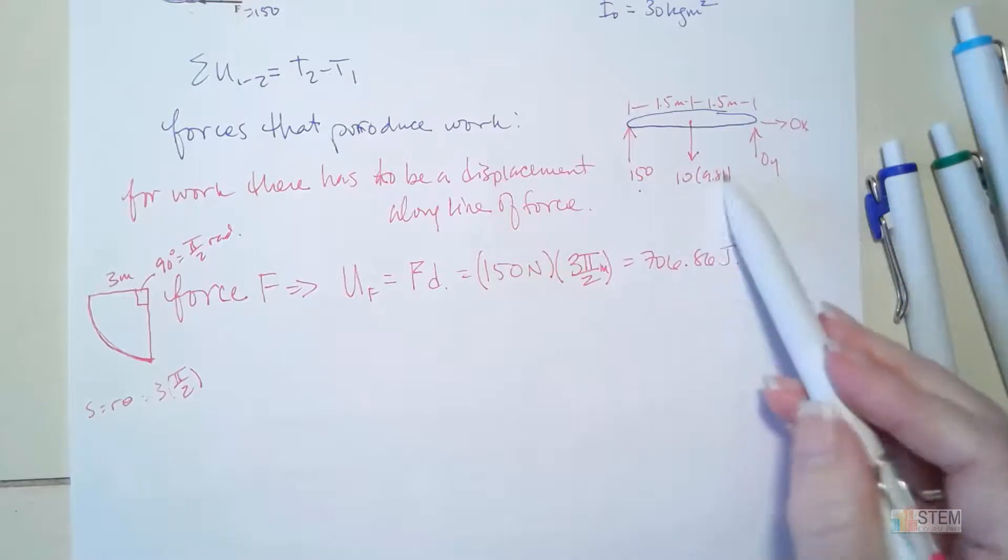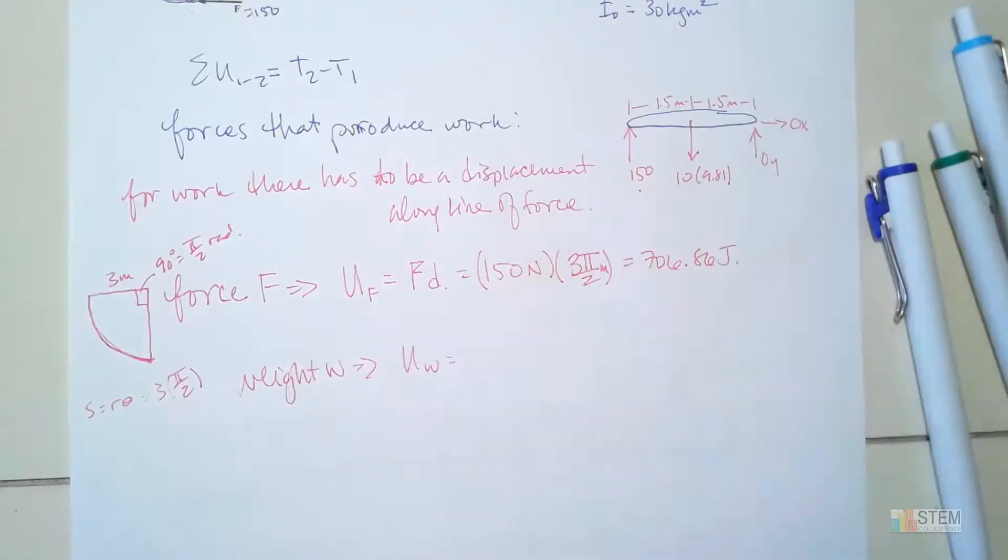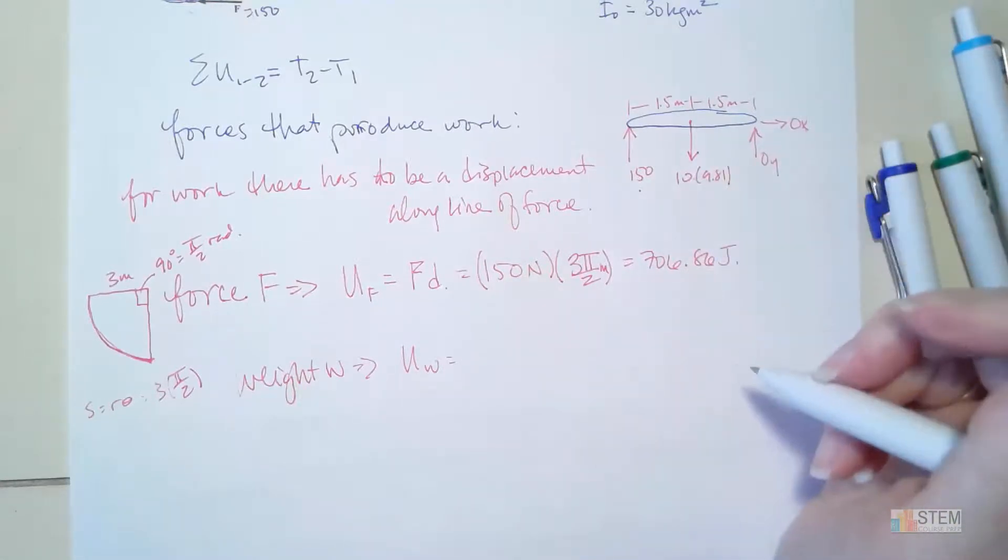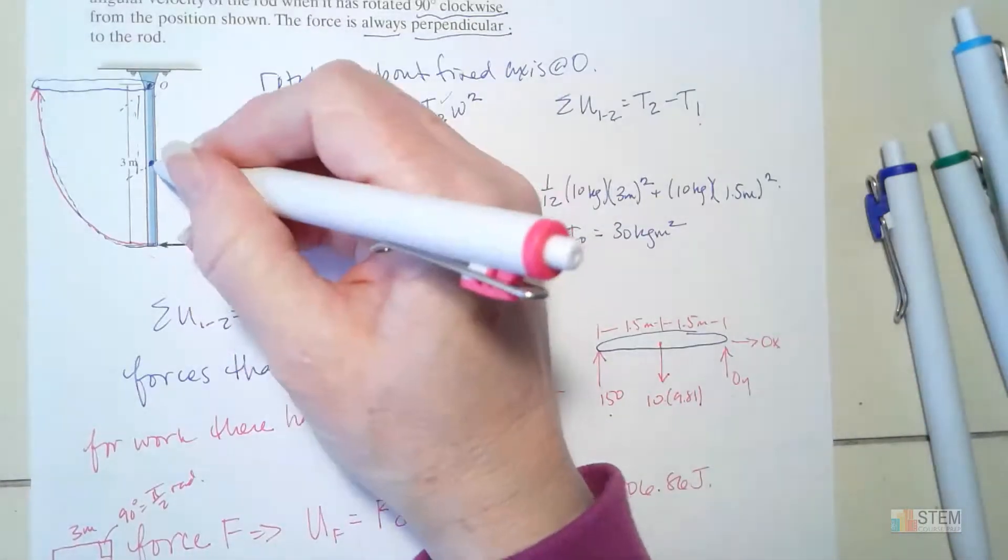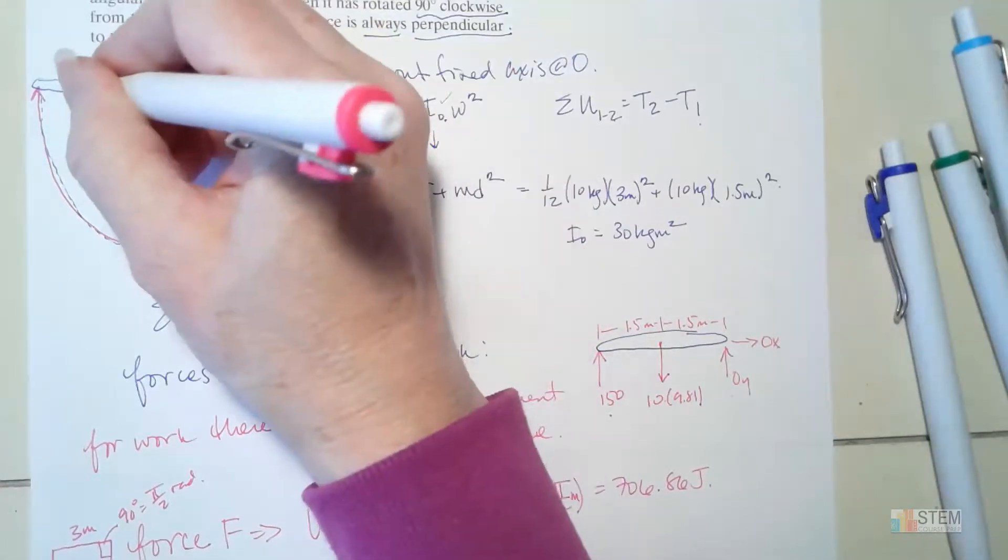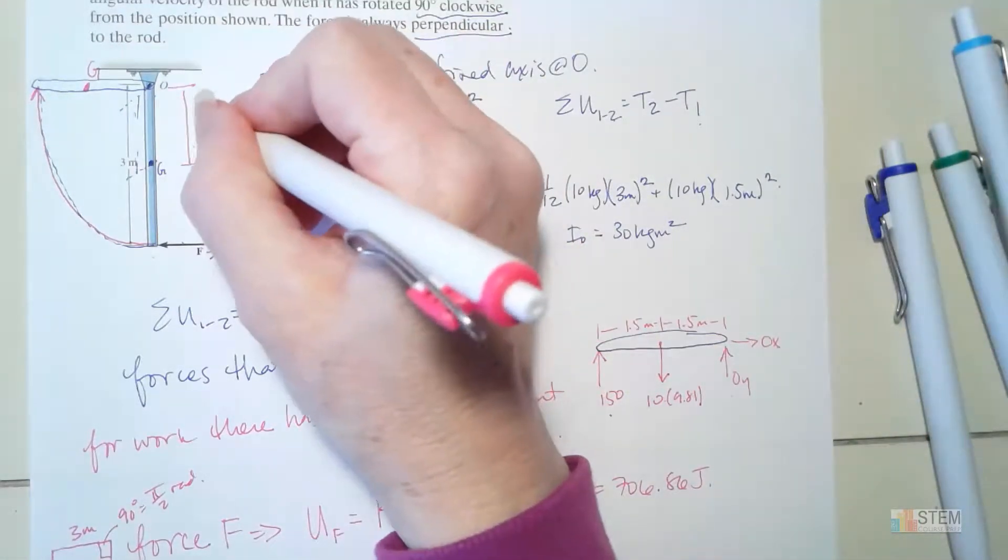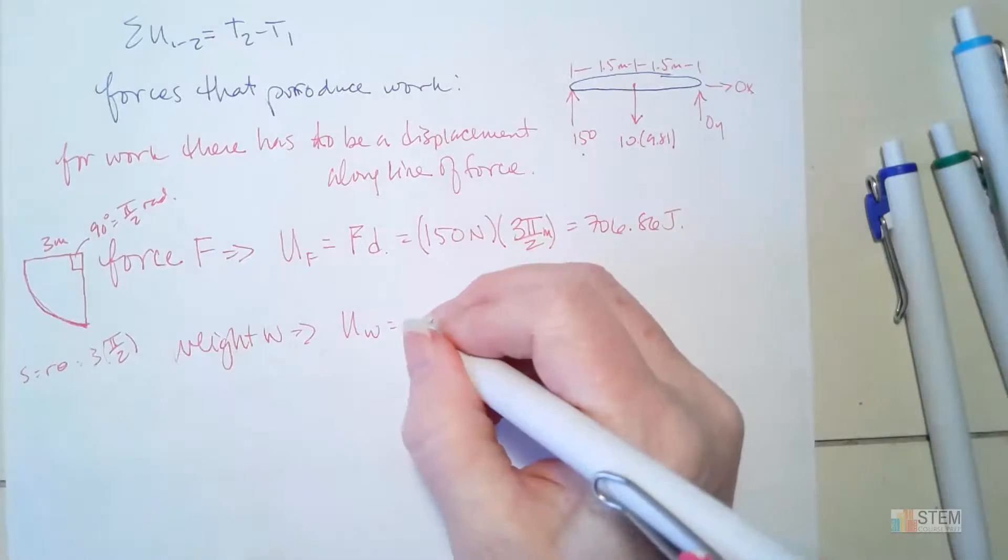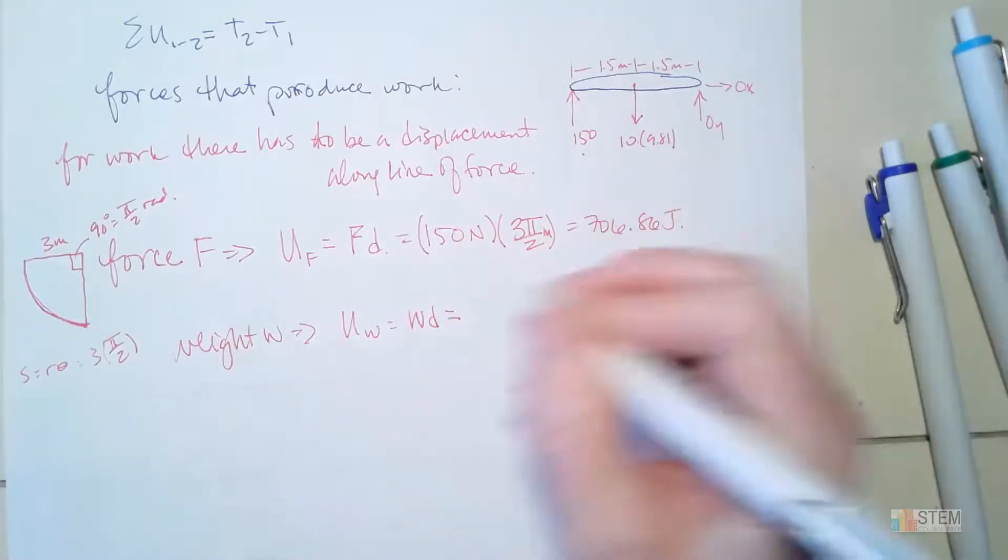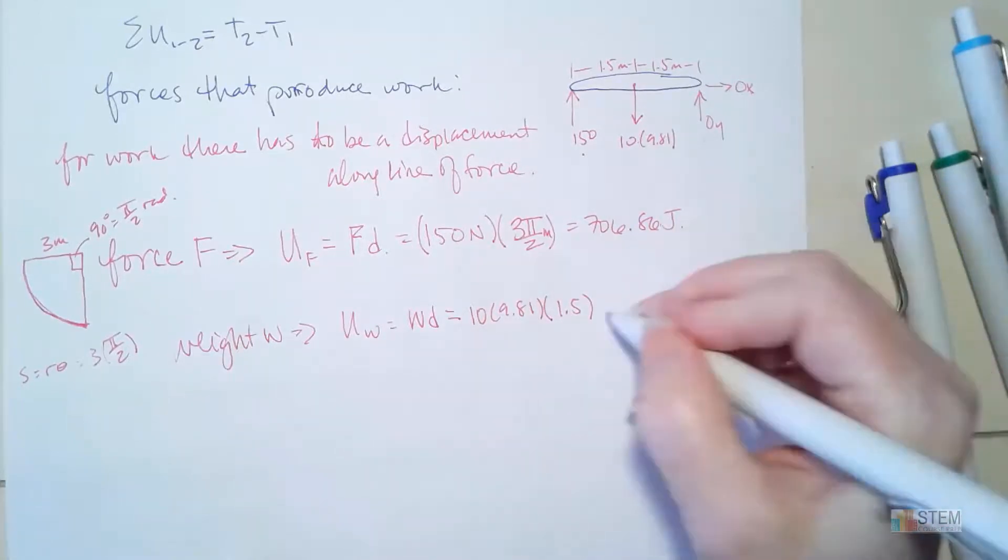Next one that's going to do work will be the weight. So let's call this U_W. Weight is in the vertical direction going down. And do we have a displacement in the vertical direction? We do, because I'm going from here up to here. So I have this vertical displacement right here, which is 3/2, which is 1.5 meters. So we're going to have the weight times that distance. So we have 10 times 9.81, that distance is 1.5. And I didn't mention it up here, but we got to check the sign. So will this be positive or negative?